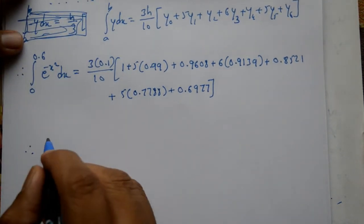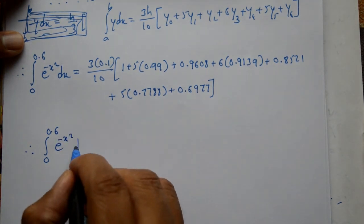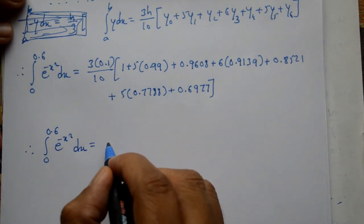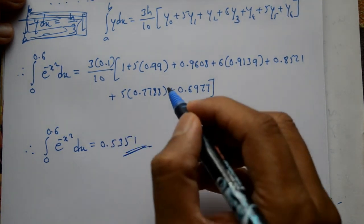Therefore, using calculator, integration of 0 to 0.6 e to the power x square dx equals 0.5351. This is the required solution.